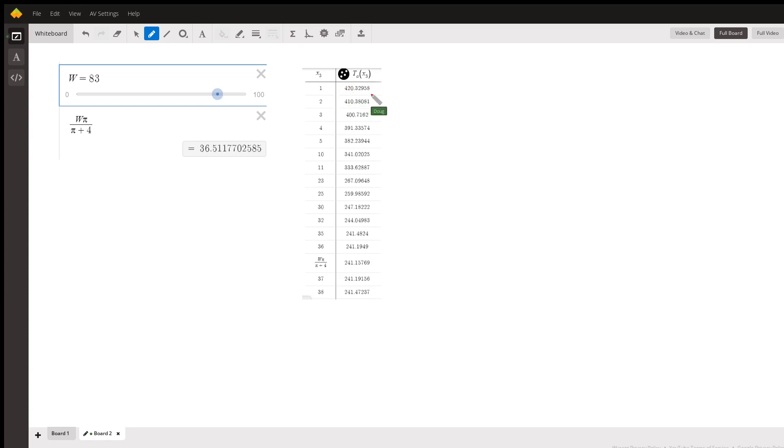So we can see that when we have this wire that's 83 units long, and I only use one little piece here for the circle, that the total area is 420.32. And as x gets bigger, the total area gets smaller and smaller until we hit this value right here.